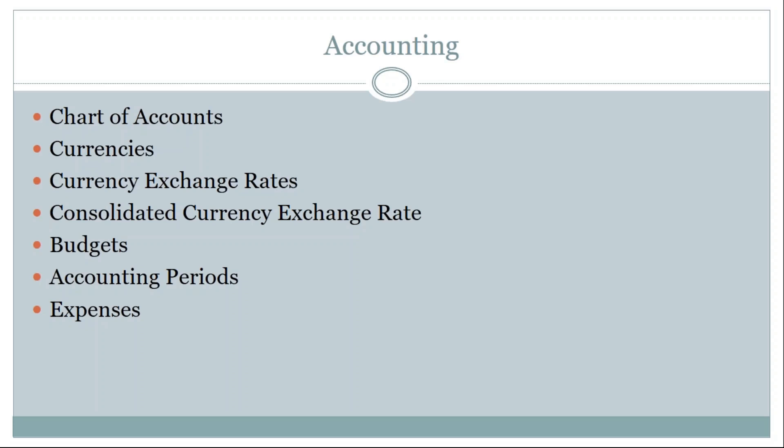Accounting periods are created in NetSuite to define financial time frames. For example, January to March is the first quarter, called Q1. Periods are set up for every year, and these are called accounting periods.